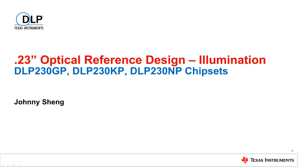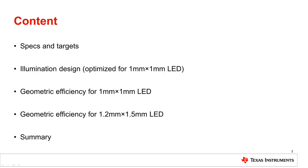This presentation provides an optical reference design for a 0.23 inch digital micromirror device (DMD), focusing on the illumination. We'll start with the DMD optical specifications and the design targets. Then the illumination design layout will be shown, which is optimized for a 1 mm by 1 mm LED light source. You will be able to see the optical components, how rays pass through the system, as well as the overall optical size.